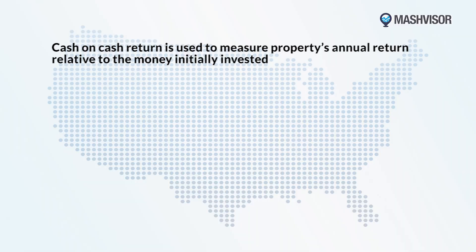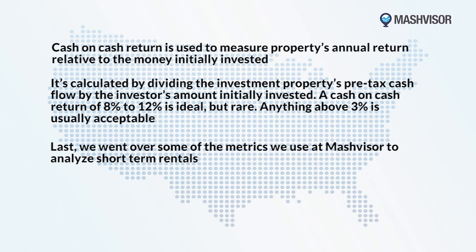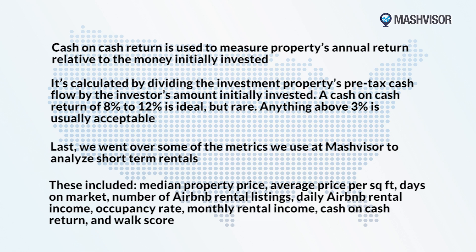So let's recap so far. Cash-on-cash return is used to measure a property's annual return relative to the money initially invested. It's calculated by dividing the investment property's pre-tax cash inflows by the investor's amount originally invested. A cash-on-cash return of 8% to 12% is ideal but rare. Anything above 3% is usually acceptable. We also went over the key metrics used at Mashvisor to analyze short-term rentals: median property price, average price per square foot, days on market, number of Airbnb rental listings, daily Airbnb rental income, occupancy rate, monthly rental income, cash-on-cash return, and walk score.